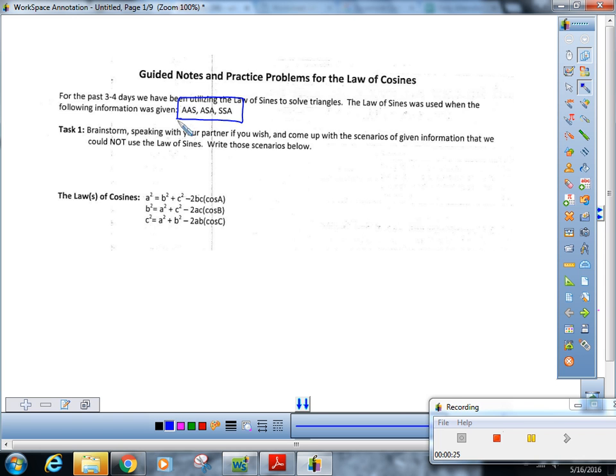Now which of those situations was the ambiguous case? The ASS or the SSA. So this is our special difficult case, and what do we have to do during that situation? We have to test to see if there are one solution, two solutions, or no solutions. Does that make sense?